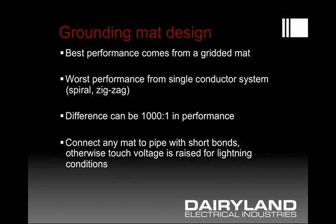The best performance in a grounding mat system comes from a mat with a grid style. Compared to a mat made up of a single wire — whether spiral, zigzag, or any other shape — a single-conductor system has a very long length. Long lengths have high inductance, and for a lightning event, high inductance produces very high voltages. The difference between these two mat designs could be as much as 1,000 to 1 — a very large performance difference, all because of inductance.